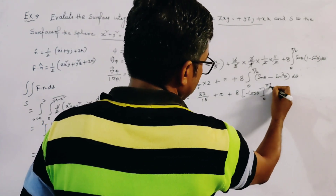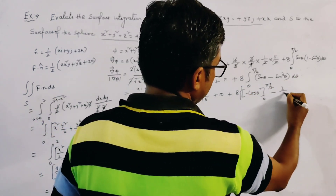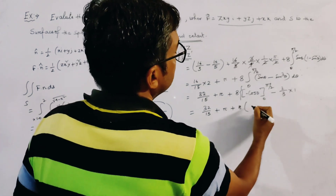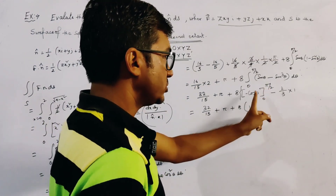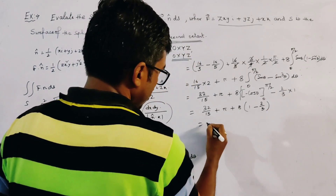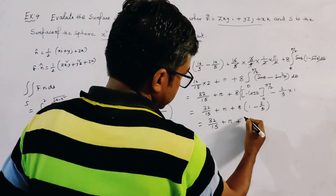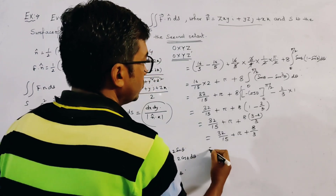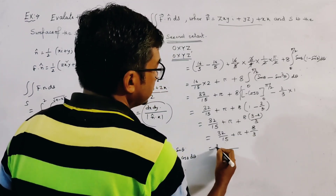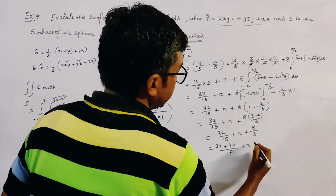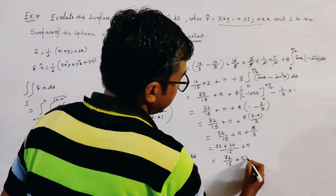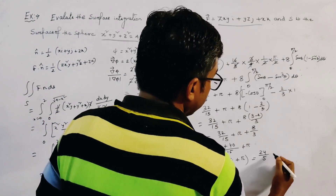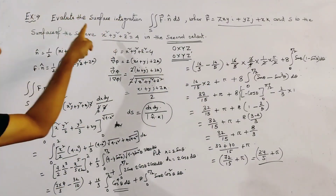This is minus cos θ, with range 0 to π/2. The first term and the second term is 2/3 · 1. So the total value is 32/15 + π + 8 · (1 − 2/3), which gives 32/15 + π + 8/3. Taking LCM 15, this is 32 + 40 = 72, so we get 72/15 + π. Cancelling 3 from numerator and denominator gives 24/5 + π. This is the value of the surface integration.